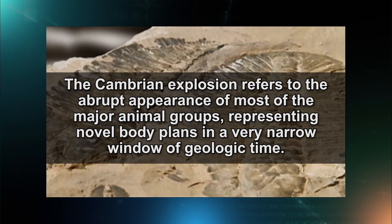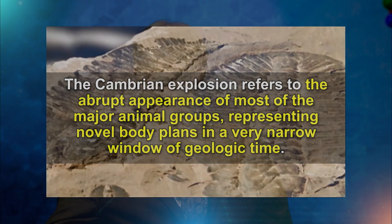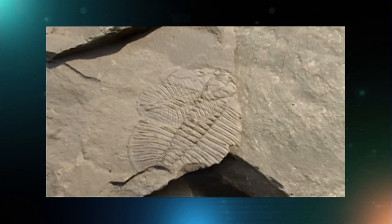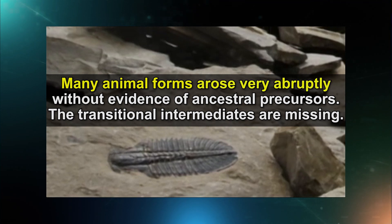The Cambrian Explosion refers to the abrupt appearance of most of the major animal groups called the phyla — the largest division of animal life — representing novel body plans in a very narrow window of geologic time. We have lots of fossils in the fossil record; the famed trilobites are one of the most iconic fossils of this Cambrian period. But there are many other animal forms that arose then, and they did so very abruptly without evidence of ancestral precursors. The transitional intermediates are missing.